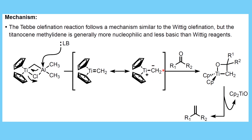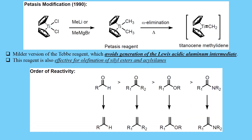The carbanion on CH2 in titanocene methylidene is actually more nucleophilic compared to a normal Wittig reagent — the carbanion generated in the case of a Wittig reagent. It follows almost a similar pathway to Wittig olefination: the carbanion attacks the carbonyl and forms a betaine-type species, which on dissociation leads to formation of the respective product.